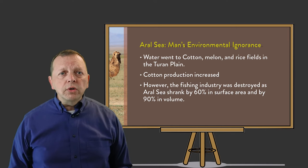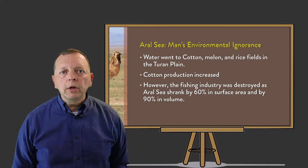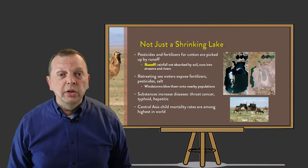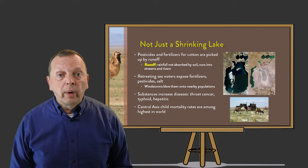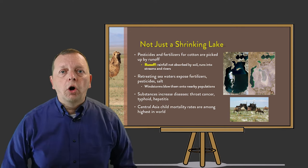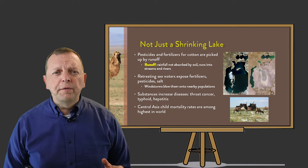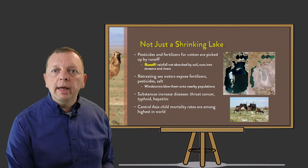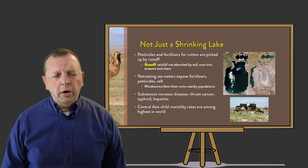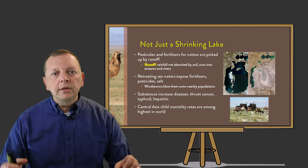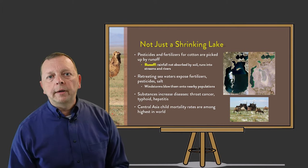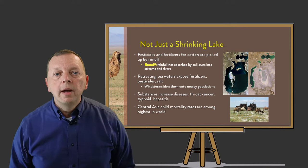The problem is even worse. In order to support cotton, melon, and rice production in the Turan Plain, the Soviets used herbicides and pesticides, which are essentially poisons. When it rained, the rainwater washed these poisons into the Aral Sea through runoff. The result is that whatever fish were left from the shrinking sea were killed by the toxins introduced through runoff. And even worse, when the poison water of the Aral Sea evaporated, it deposited these pesticides and herbicides on the lake floor, where the wind could pick them up and move them across Central Asia by wind erosion.